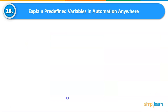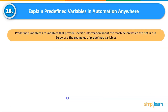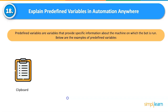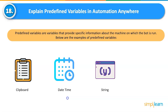Explain predefined variables in Automation Anywhere. Predefined variables provide specific information about the machine on which the bot is run. The values of predefined variables cannot be changed by users. Examples include clipboard, date and time, string, and system settings and parameters.